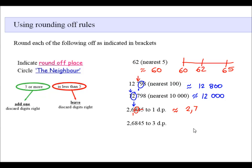Let's have a look at this number. We are going to round off to three decimal places. So we are going to one, two, three. That is where I am rounding off to. I look at the neighbor. The neighbor is five. If it is five or more, I add one to the round off place and discard the rest. So this rounded off will be 2.685 to three decimal places.